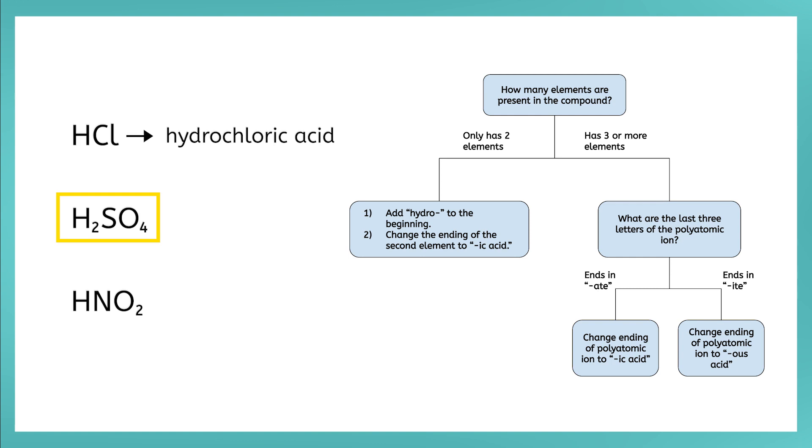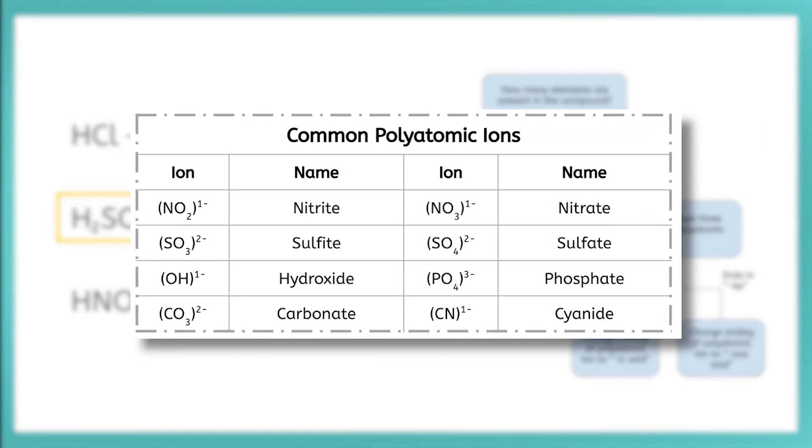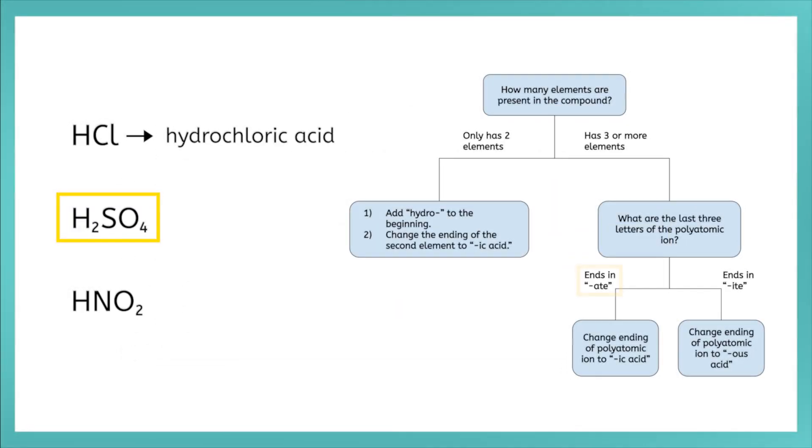What about H2SO4? It has three elements, so we have to look at our polyatomic ion chart from unit 4. Looking at that chart, we notice that the polyatomic ion is called sulfate. Since it ends in A-T-E, we change the name to IC and add the word acid. There is no prefix when the acid contains more than two elements. Therefore, H2SO4 is sulfuric acid.